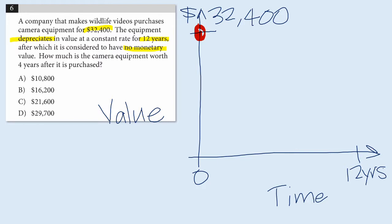And they tell us that that decline is happening at a constant rate. So that means we're talking about a line. So this line represents how much the equipment is worth over time. It's going down, down, down, and after 12 years it'll be worth zero dollars.